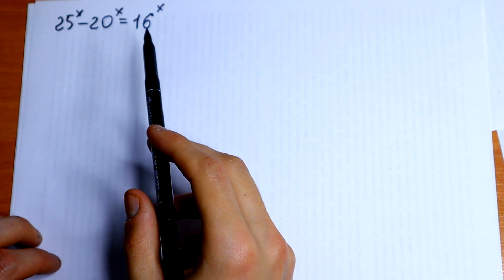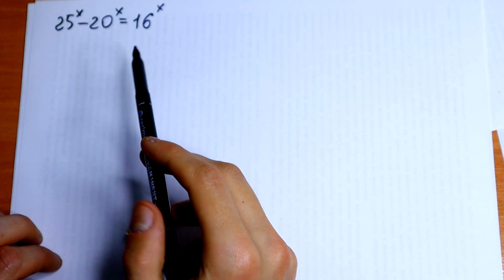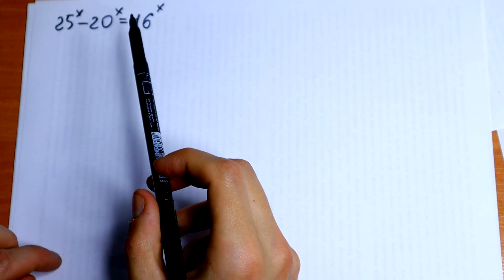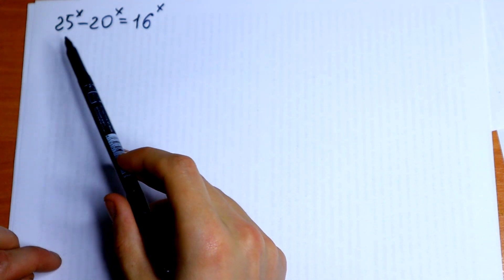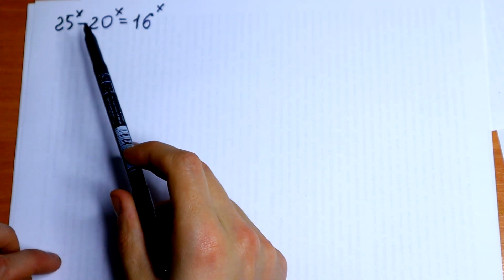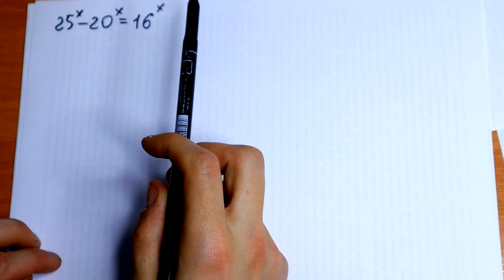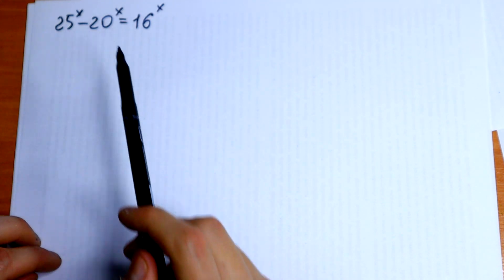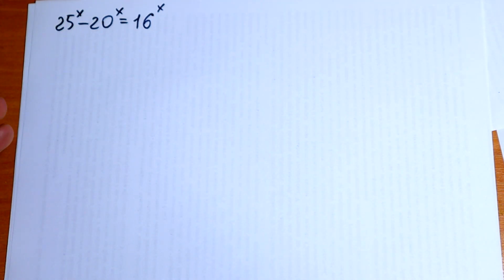Hello everyone and welcome back to MathMood. Here we have an interesting exponential equation where we have different bases but same exponents. On the first side this equation is real hard because we have different bases, but let's try to simplify this a little bit.